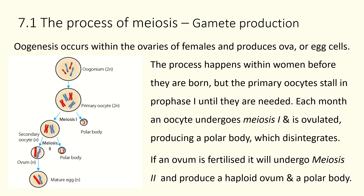The primary oocytes are made and the process partly begins, then stalls. Each month, an oocyte undergoes meiosis one and then meiosis two and is ovulated, producing an egg each menstrual cycle. This also produces polar bodies — instead of producing two secondary oocytes from meiosis one, we end up producing one and a polar body, which then dies and disintegrates.